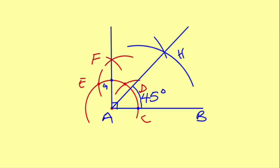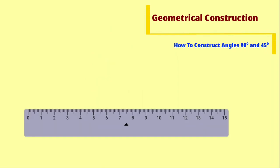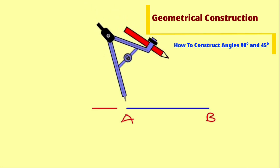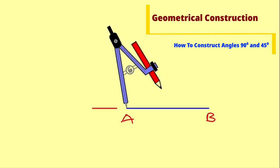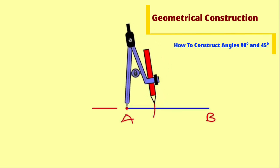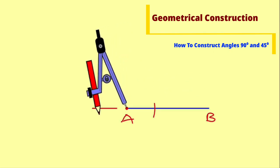But let me show you the simplest way to construct angle 45 degrees without necessarily having to construct 90 degrees first. Just bring your ruler and construct a straight line. Leave a space and extend it a little bit. Label the first line as A and B. Now bring your compass and take it to point A with a convenient radius. We are going to draw two arcs: the first one should cut line AB and the other one should cut the extended line.